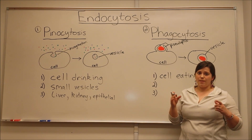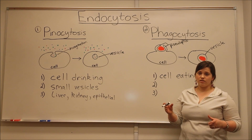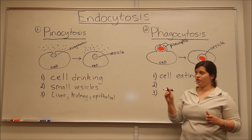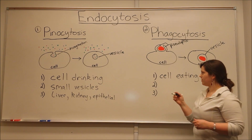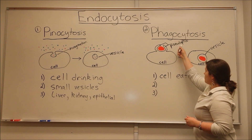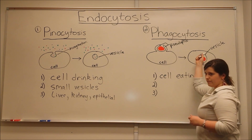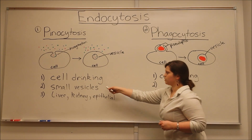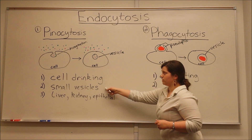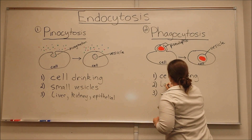These can be bacteria, these can be dead cells. You can imagine how large these pseudopodia have to be to envelop something that large. The pseudopodia bring them in via this membrane-bound vesicle, which compared to the pinocytosis smaller vesicles, phagocytosis vesicles are quite large.